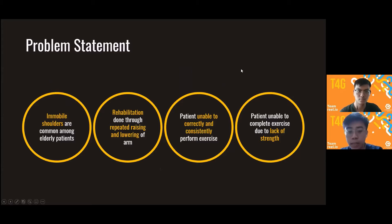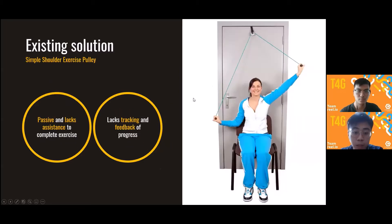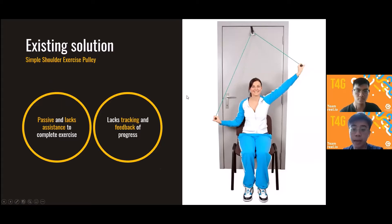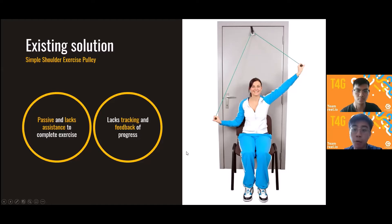We can take a look at the current exercise machine. As you can see, it's a very passive type of machine where patients use their own arm strength to lift the other arm up to improve mobility. It also does not provide any tracking or feedback of the progress they have made during the exercise.